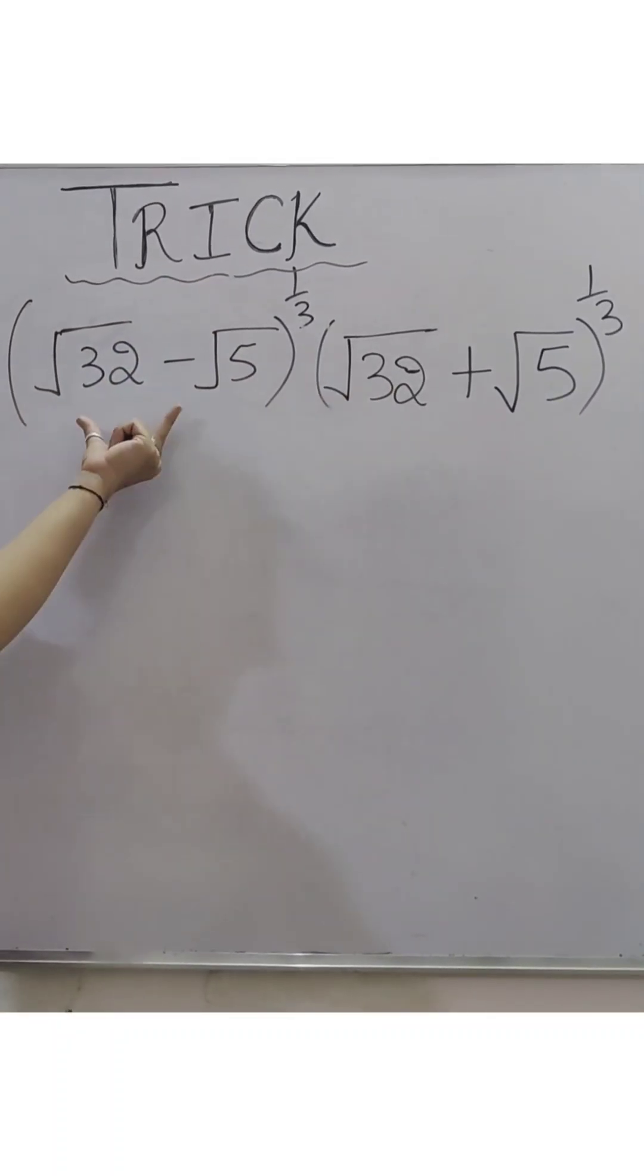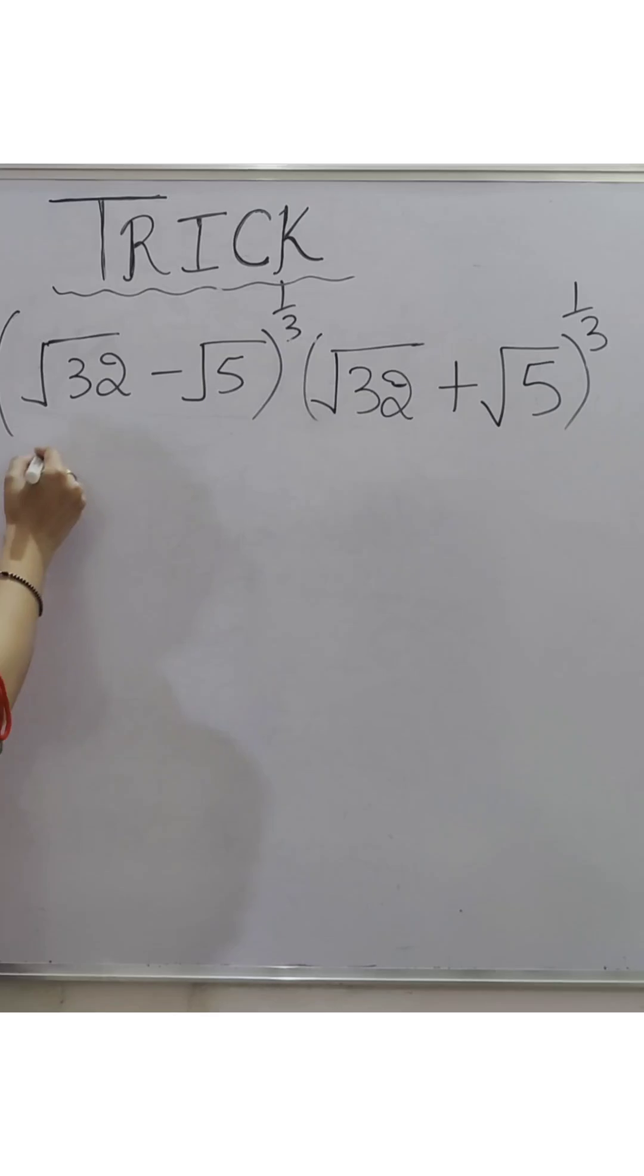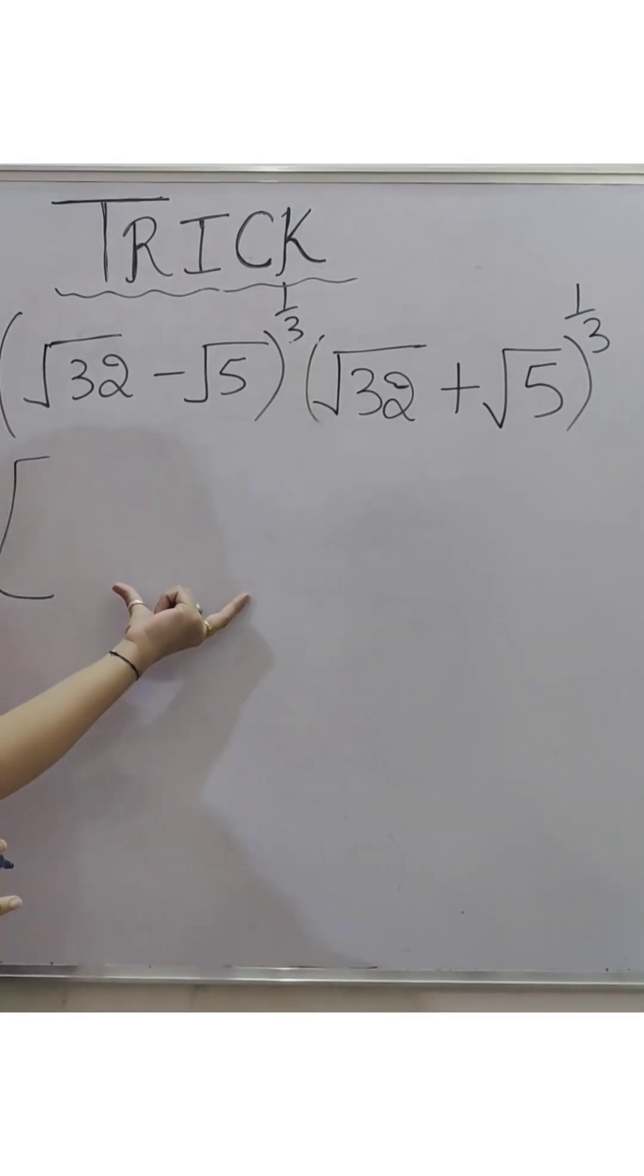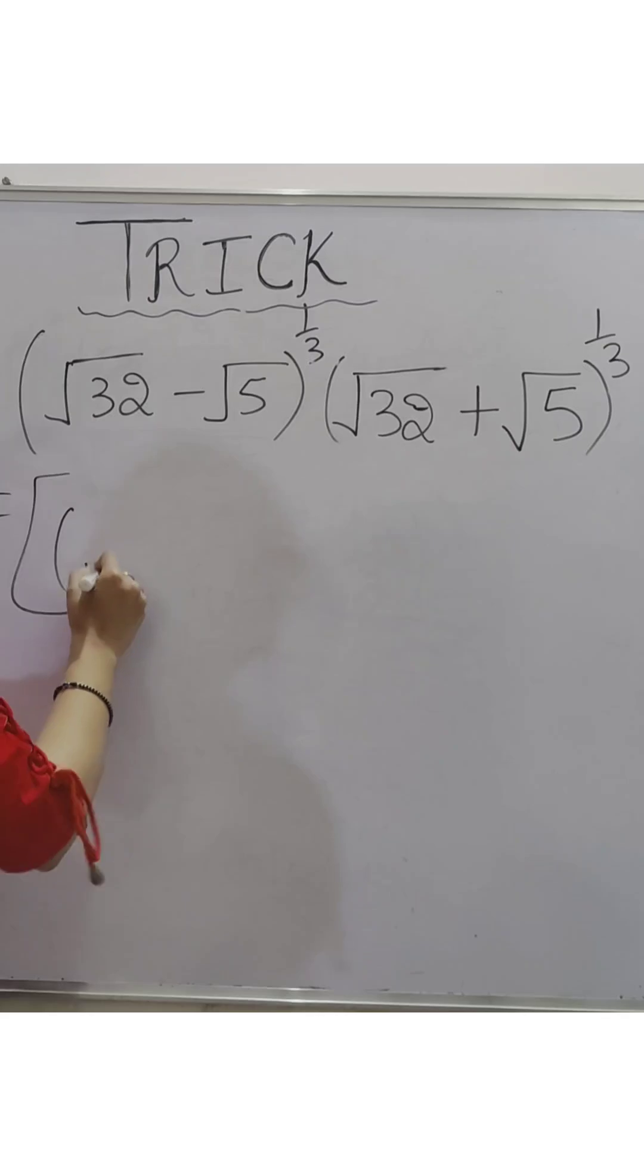Trick to simplify the exponential form. These two base values are different but the powers are the same. As per the laws of exponents, you will keep all values in multiply and the whole power you will write one time. So I have root